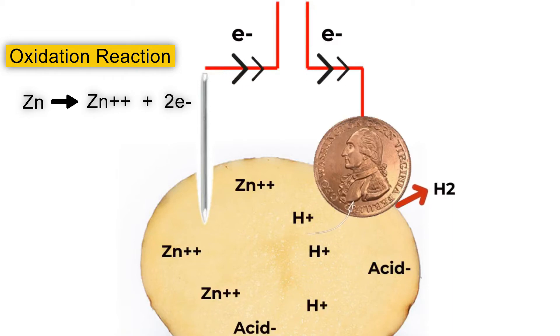These positive hydrogen atoms left behind are attracted to the copper electrode with all the electrons. These hydrogen atoms then absorb an electron from the copper electrode in a reduction reaction and become neutral hydrogen gas. You might see this as a slight fizzing around the copper cathode in your potato.